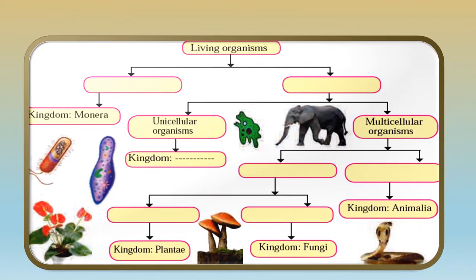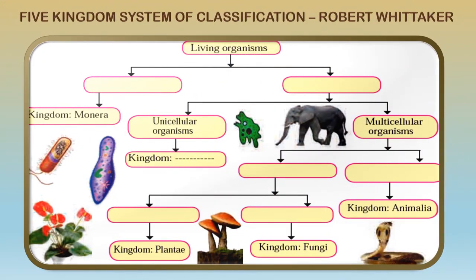Living organisms are classified according to a five kingdom system proposed by Robert Whittaker. Living organisms are divided into two subgroups depending upon their cell, whether they are prokaryotes or eukaryotes.